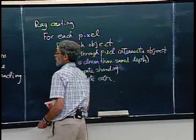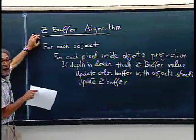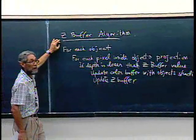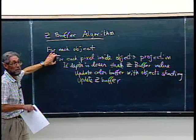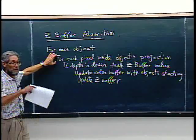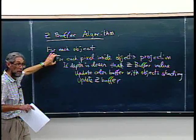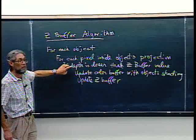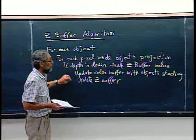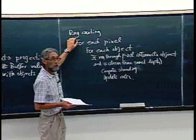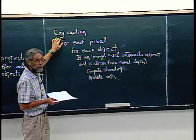Going back to the Z-buffer algorithm: you need to initialize the Z-buffer to a very far value and the color to a default background color. This inner loop is a scan conversion step — find the pixels inside the projection of an object like a polygon. In the ray casting algorithm, you're storing only one single color and one single depth for the ray, so it doesn't require the full depth buffer storage.